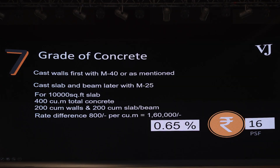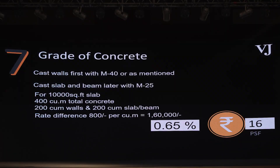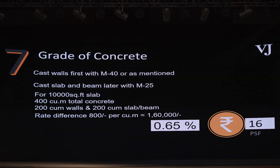Grade of concrete is also quite important nowadays, considering high-rise requirements. Many times the columns are of a different grade and the slabs are of a different grade, but our engineers on site often cast the columns or shear walls and slab in the same grade, which has a cost impact. If you can delay your casting by one day, you can cast the shear walls in a different grade and the slabs in a different grade, which can help you optimize a substantial amount.